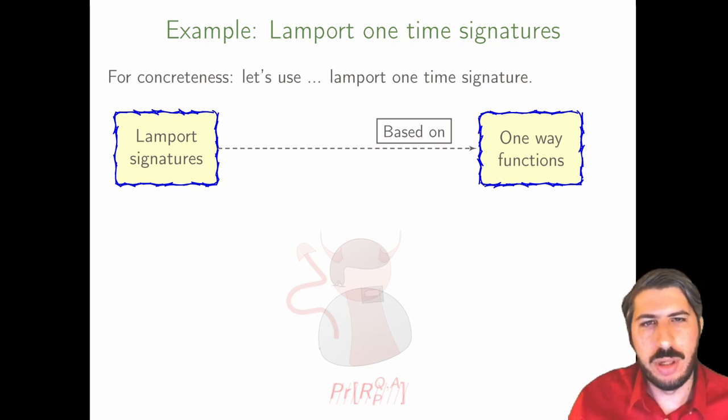Then a signature can be constructed by just revealing the corresponding first or second element of its pair for each bit of the message. And that's the full idea, one time. In practice, we want efficiency.